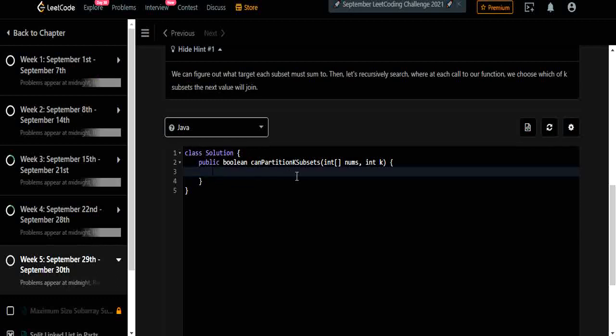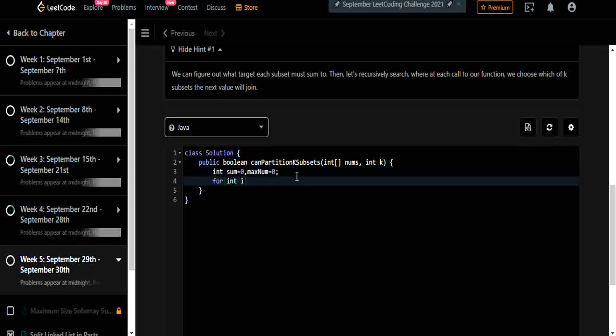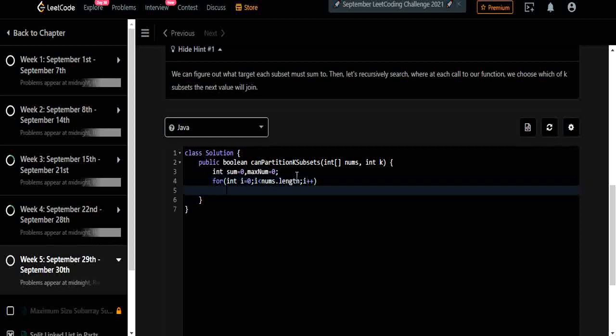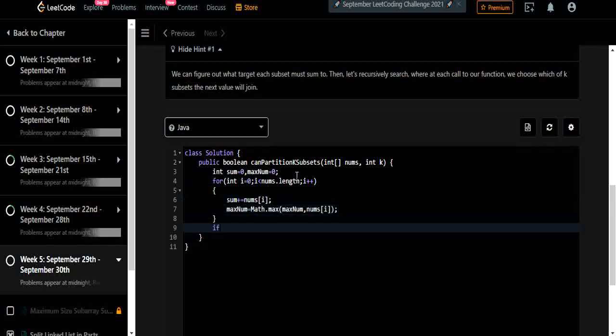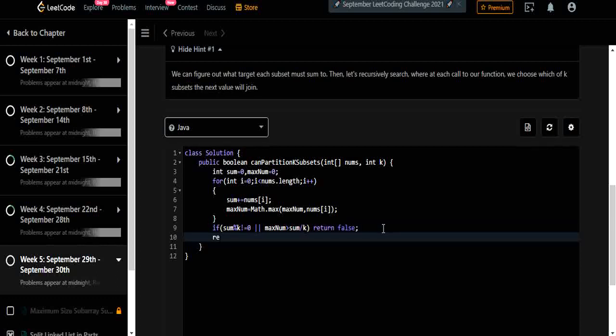We are going to use a recursive DFS. Let's initialize the basic variables. First let's calculate the sum and find the target and whether it is possible to divide the array or not. We directly return false if the remainder is not equal to 0 or the maximum number in the array is greater than the subset sum we found. If not, if it is true then we are going to call a helper method which is nothing but our DFS which is going to explore every number to find its pair.